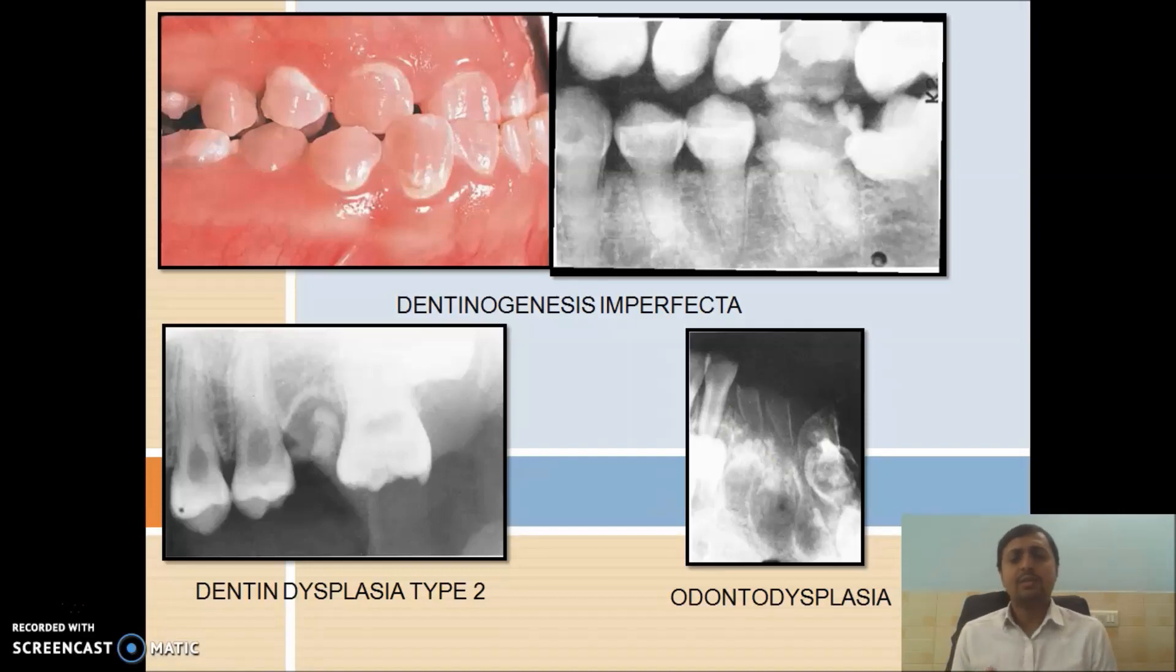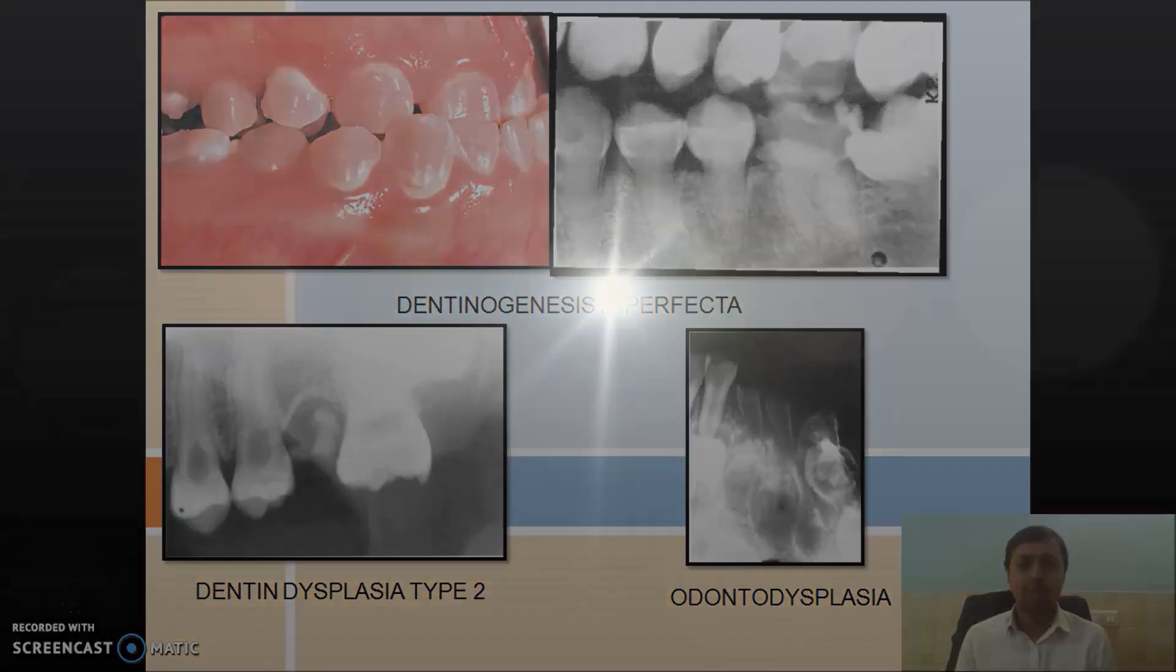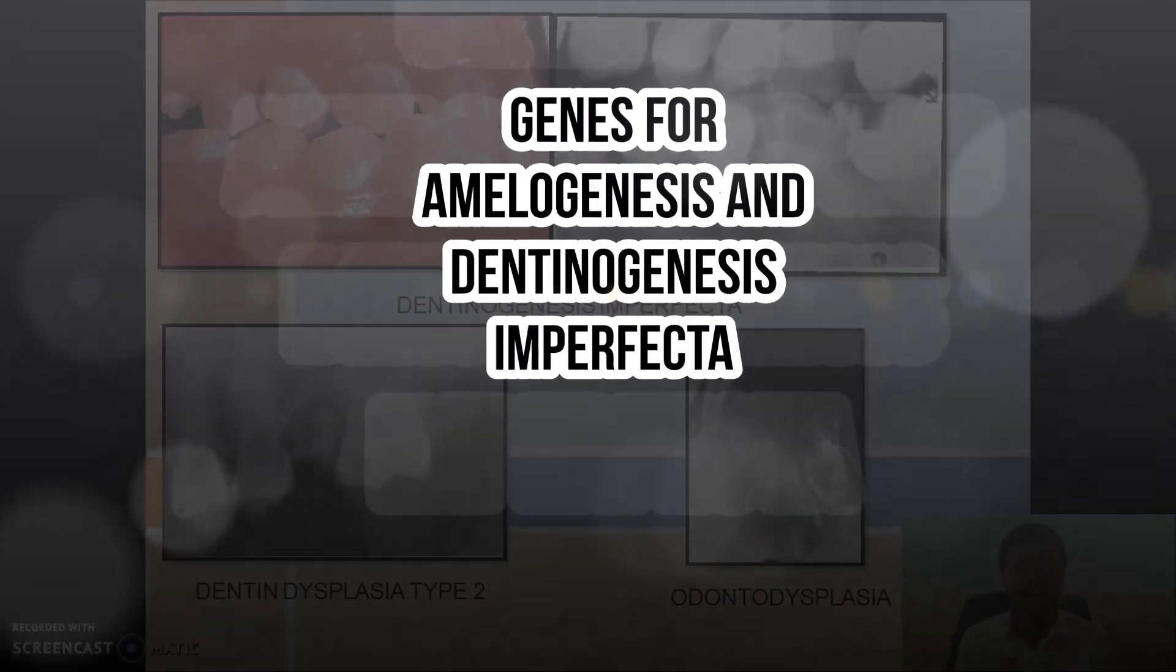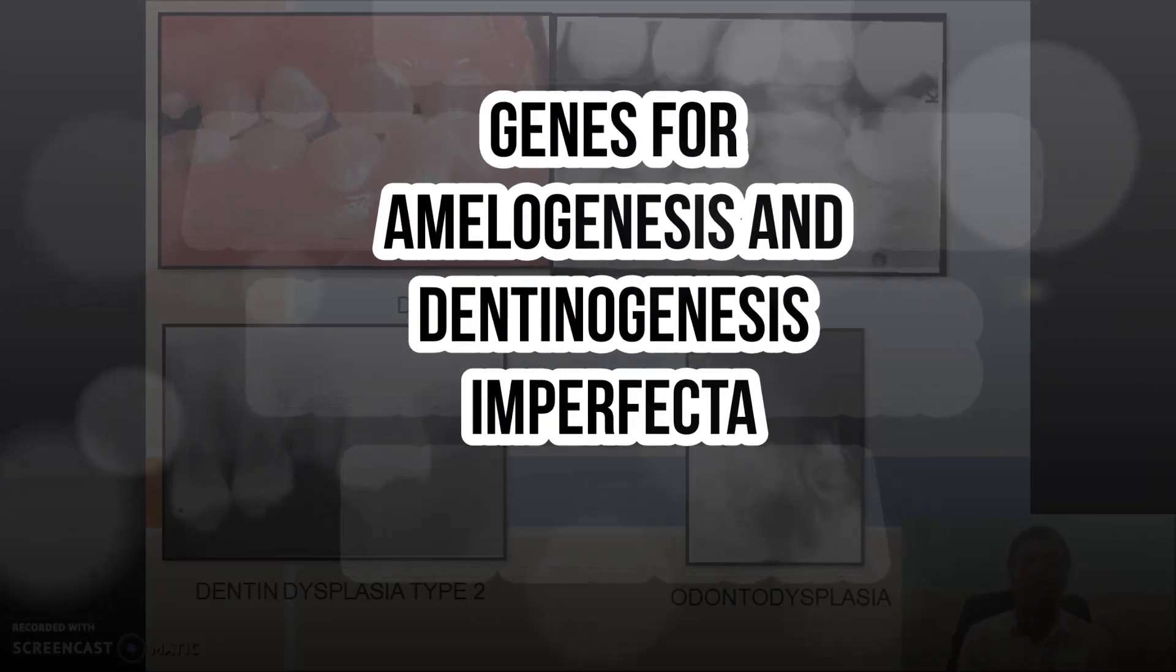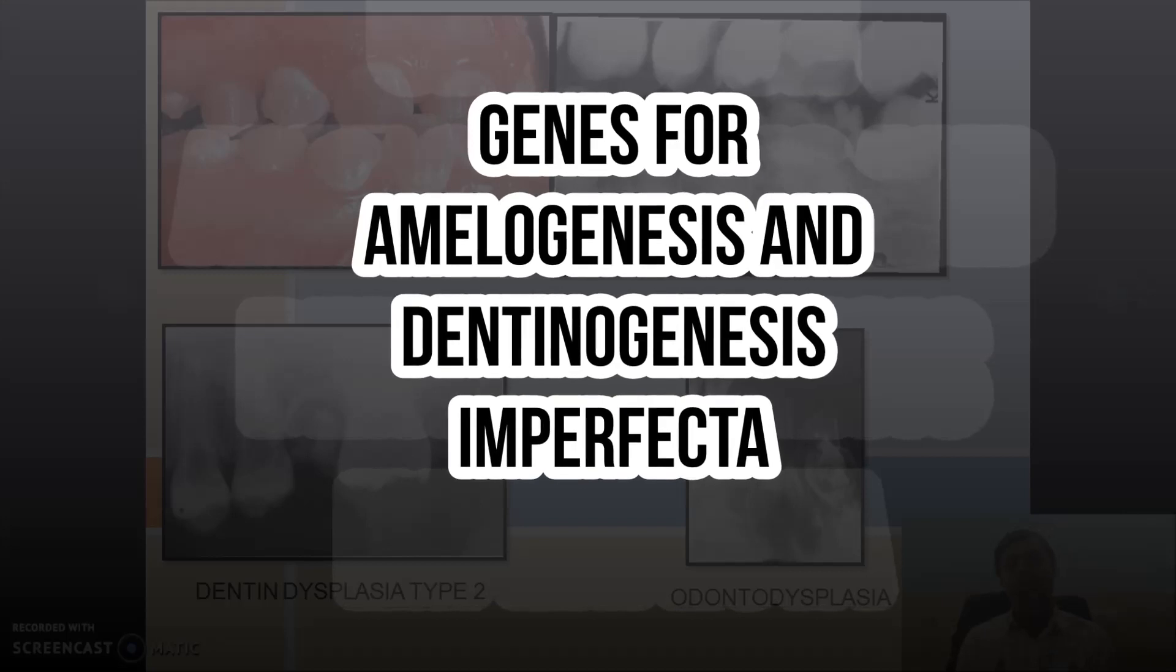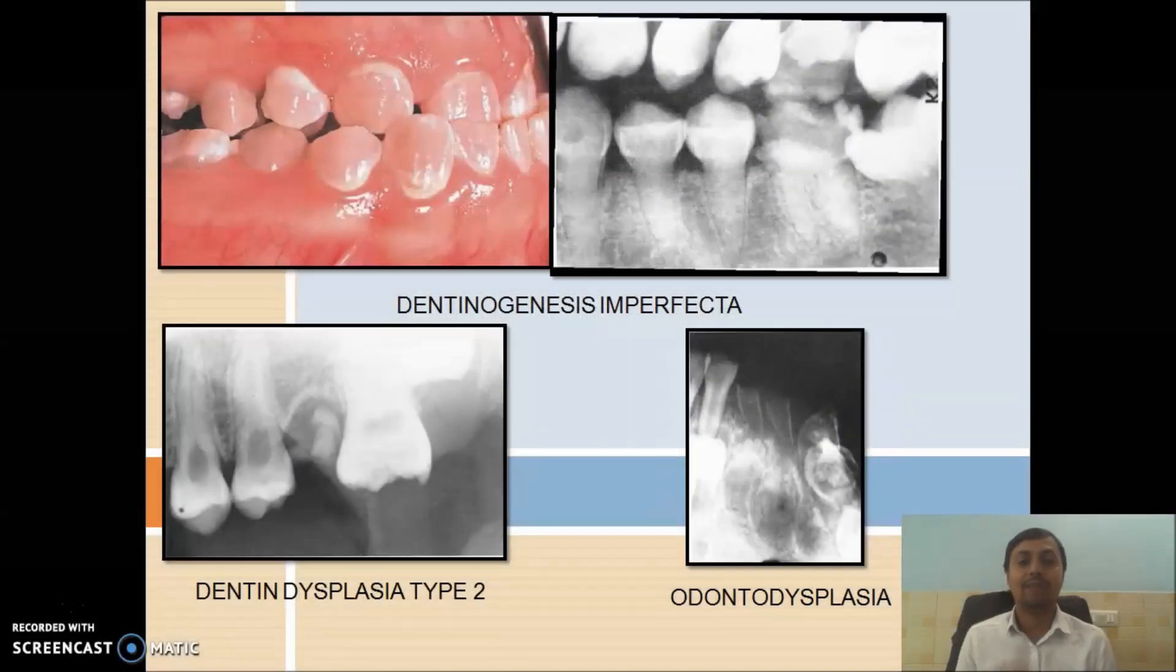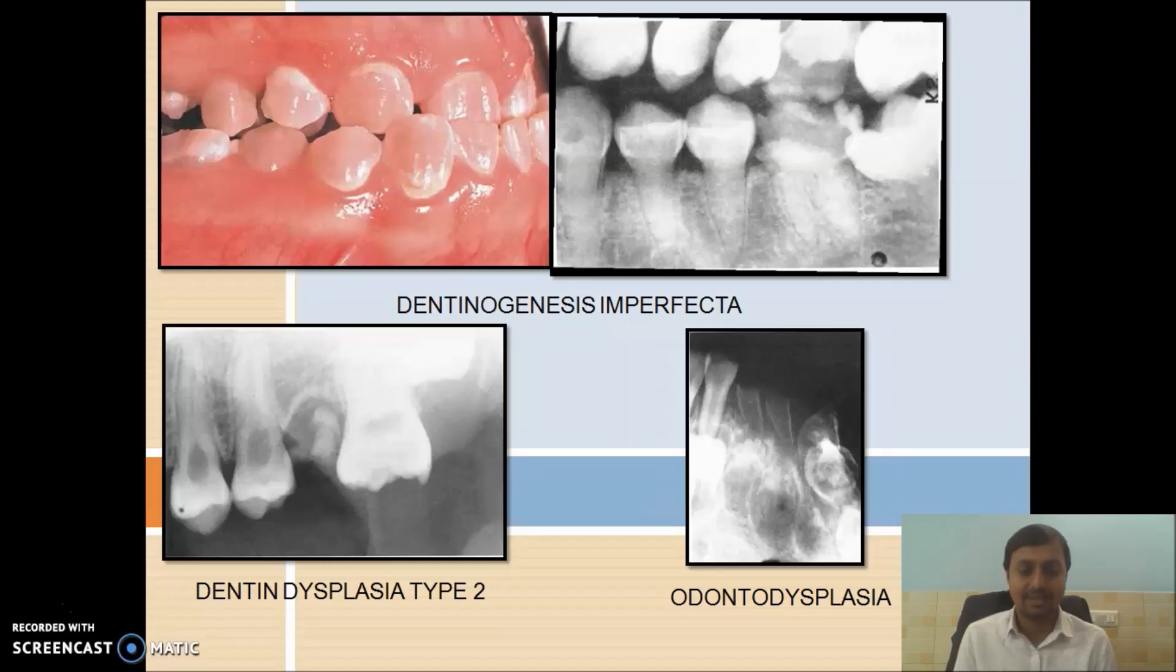Why dentinogenesis imperfecta occur? Due to mutation of some genes like DSPP, dentin sialophosphoprotein. Amelogenesis imperfecta also occurs due to mutation of certain genes like amelogenin, MMP20, enamelin, kallikrein 4. These four are responsible for amelogenesis imperfecta.